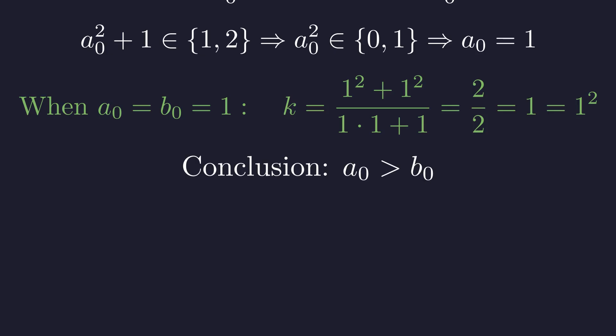This forces us to conclude that in our minimal solution, a0 must be strictly greater than b0. Now comes the heart of the proof, the famous Vieta jump. We'll use our minimal solution to construct a quadratic equation, then use its second root to create a new solution.